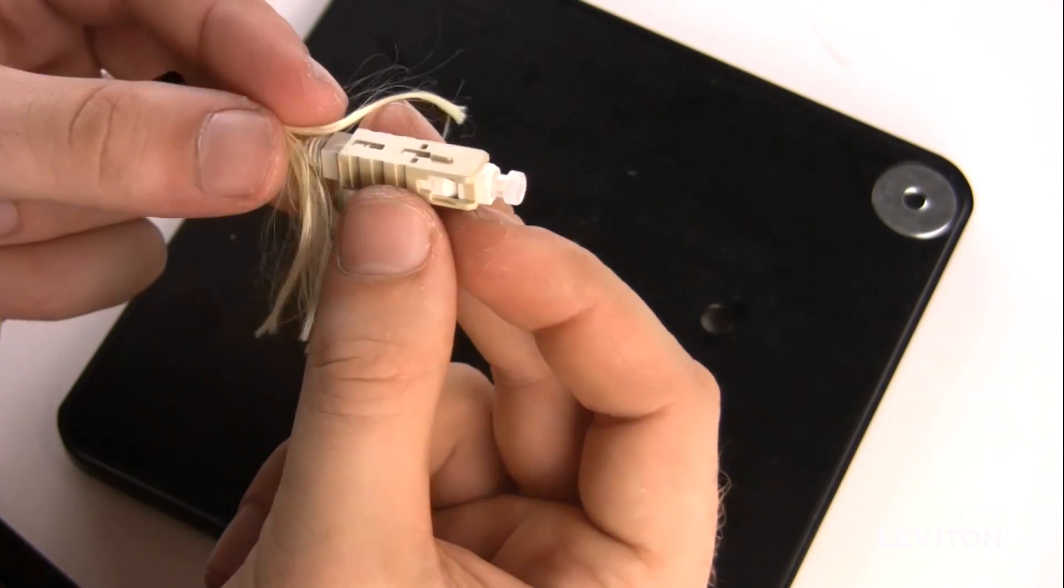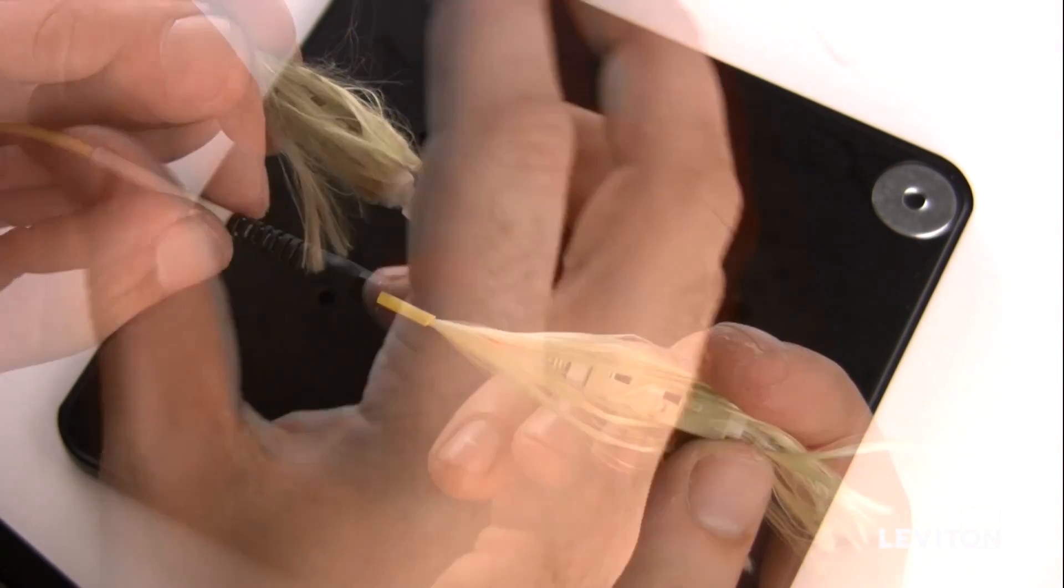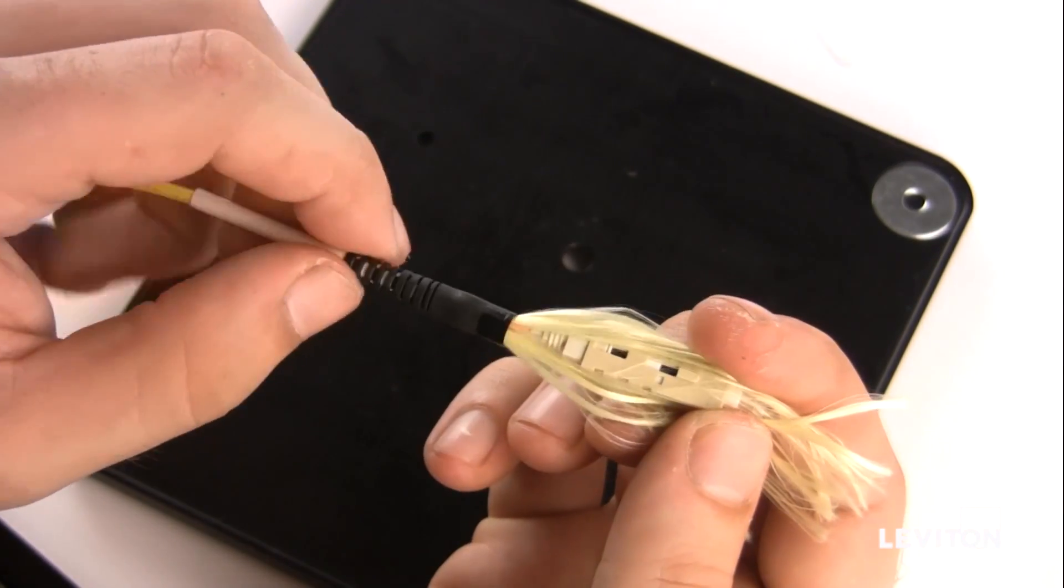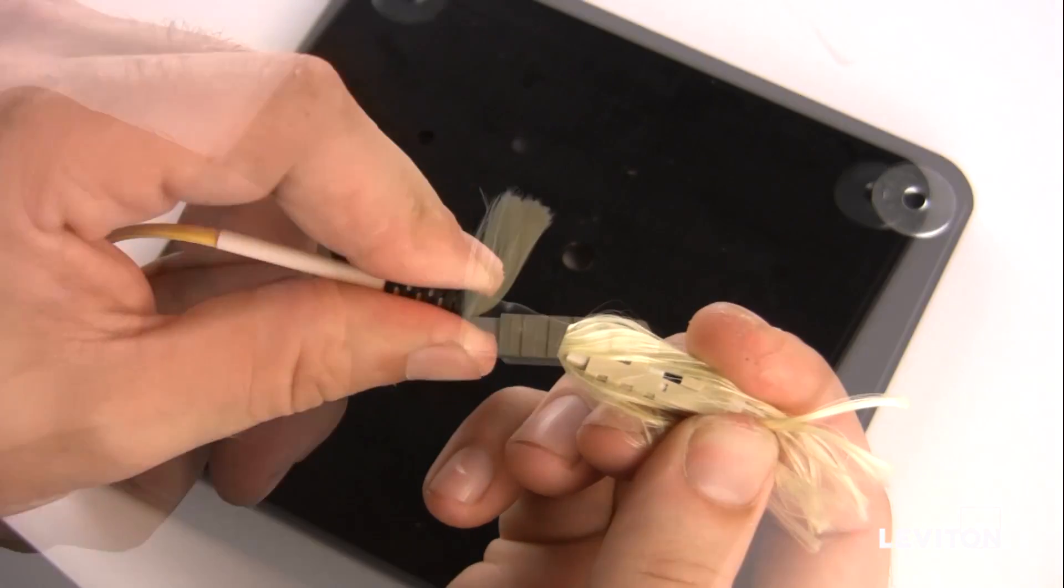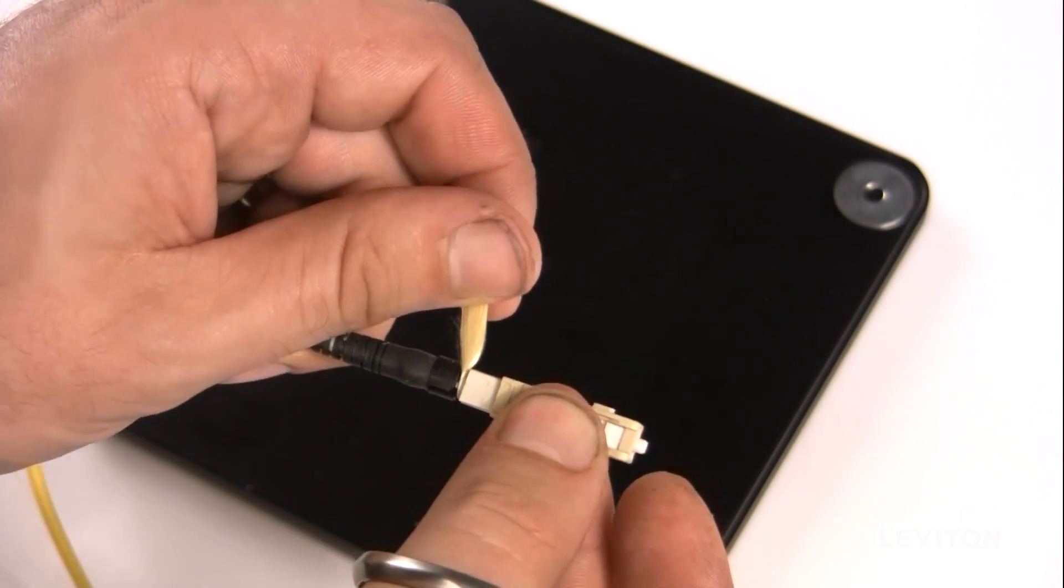Next, fan Kevlar around the connector. Grip the Kevlar on both sides to maintain tension and screw the boot onto the back of the connector. Trim the Kevlar even with the boot.